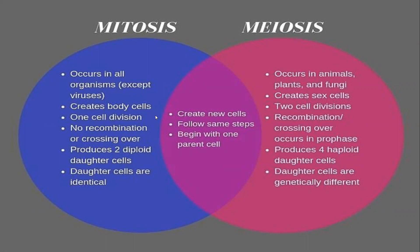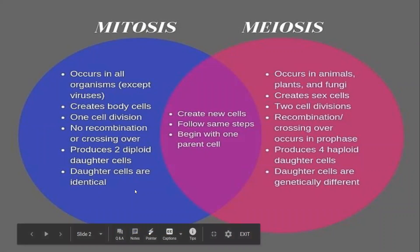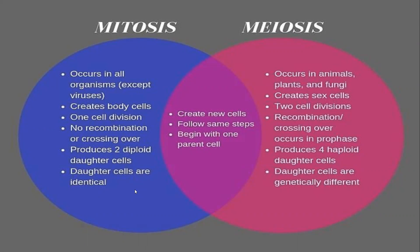Ideally, there's going to be no recombination or crossing over of any of the chromosomes involved in mitosis. Recombination or crossing over is essentially an exchange of parts of the chromosome with one another — so genes moving around. Mitosis is going to produce two diploid daughter cells, and those daughter cells are going to be identical to each other and to the parent cell.